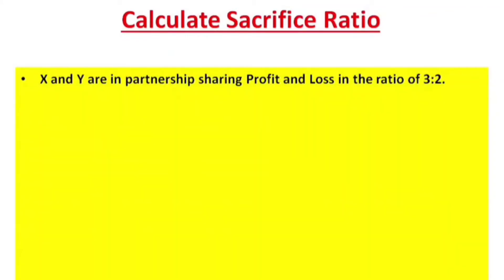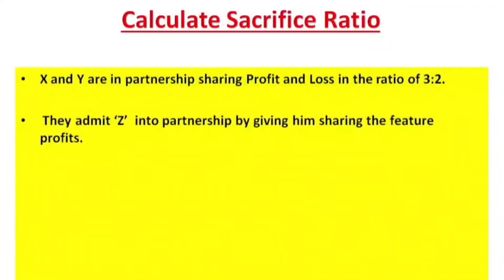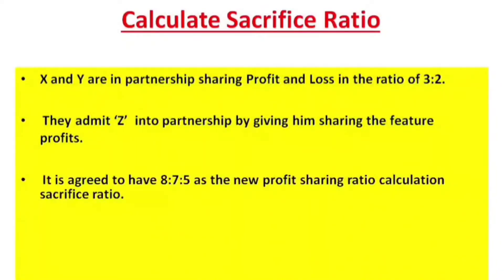X and Y are in partnership sharing profit and loss in the ratio of 3 to 2. They admit Z into partnership, giving him a share in future profits. It is agreed that 8:7:5 will be the new profit sharing ratio. Calculate the sacrifice ratio.